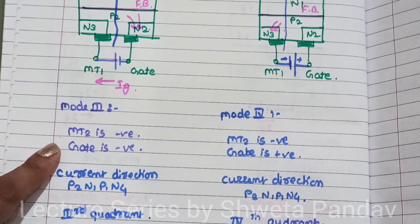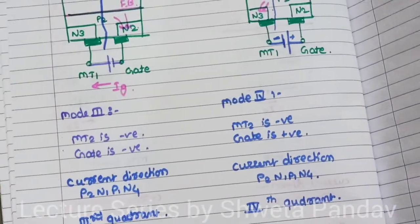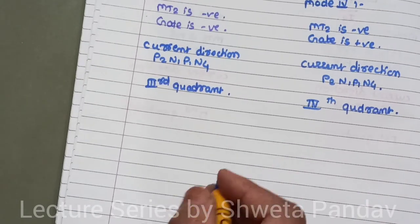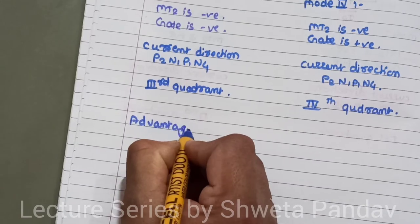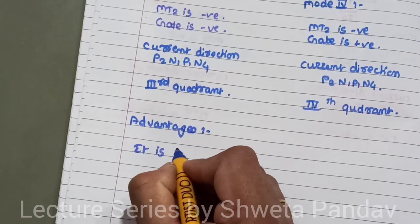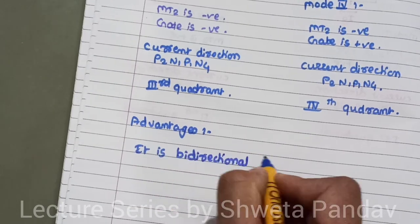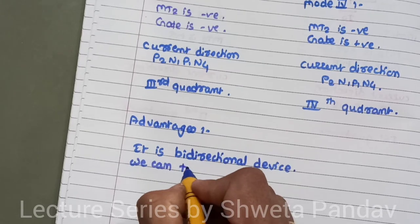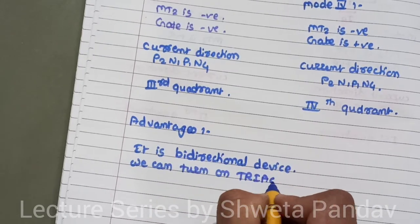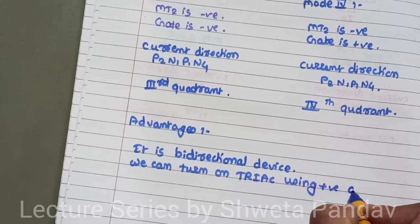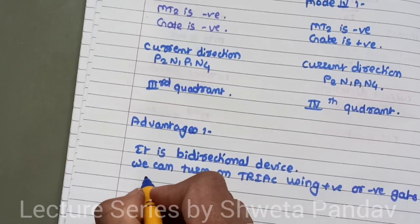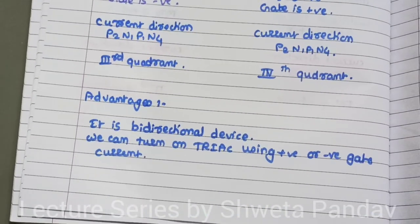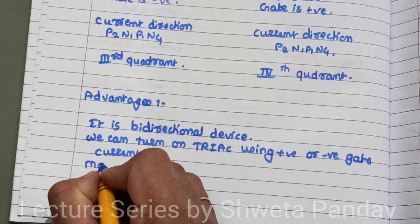So these are the four different modes of operation of the triac. Now let us see the advantages of the triac. The very first advantage is that it is a bi-directional device, meaning current flows in both directions. We can turn on the triac using either a positive gate voltage or a negative gate voltage — that is, we can trigger this device with positive gate current or negative gate current.